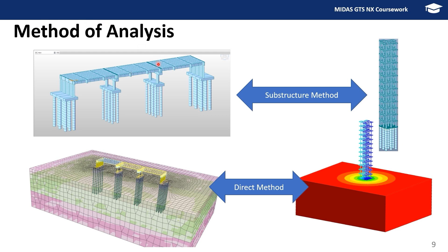In general there are two methods of analysis: the substructure method and the direct method. In the substructure method, we model the foundation along with the superstructure, or model just the foundation and apply the superstructure as a load. The resistance from the soil is modeled in the form of springs — the soil is not modeled as a continuum. For spring stiffness, there are many different calculation methods, each with its own assumptions applicable for certain materials and projects. It is important to review the assumptions of different methods before using them for heavy structures such as bridges and high-rise buildings.